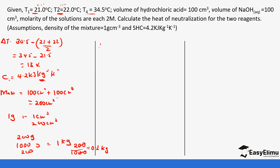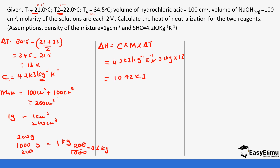Using the formula: heat change = specific heat capacity × mass × temperature change, we get 4.2 kJ/kg/K × 0.2 kg × 13 = 10.92 kilojoules. Since the question only asked for the heat of neutralization (not the molar heat), this is our answer. Make sure you are able to follow those steps.